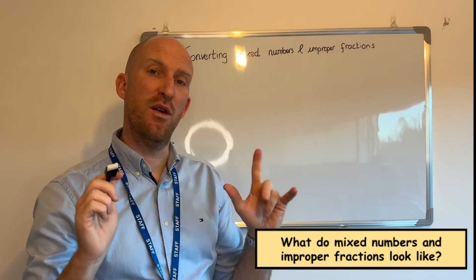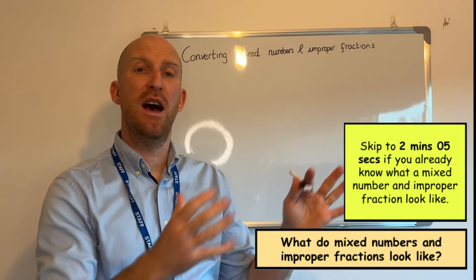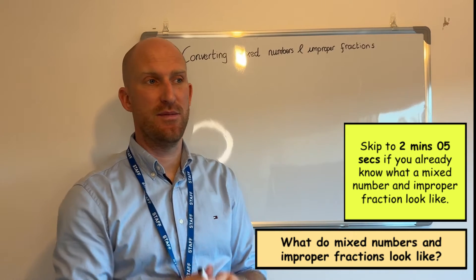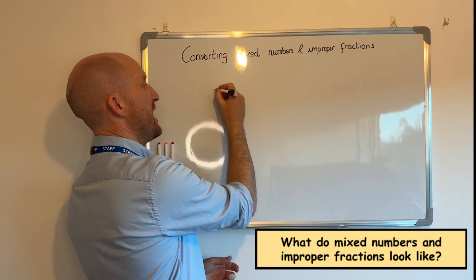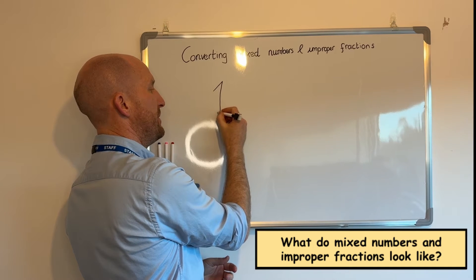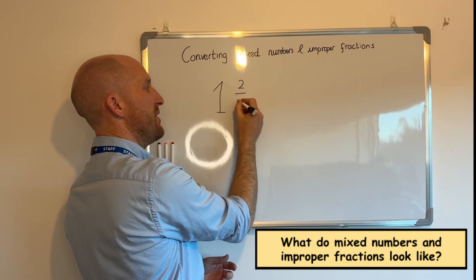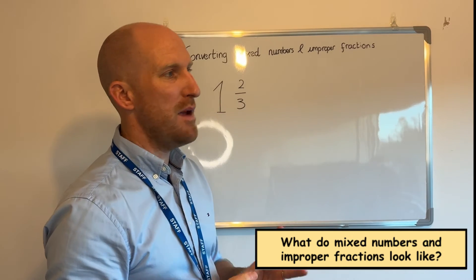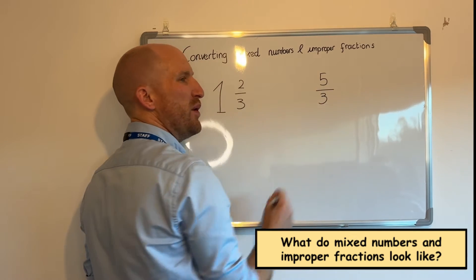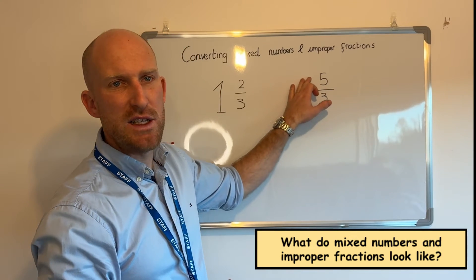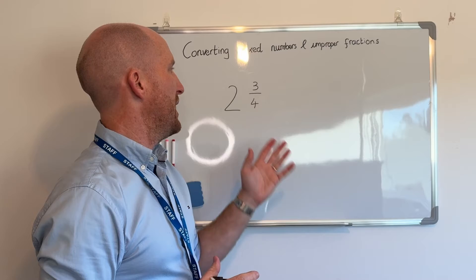Now the first thing that we need to understand is what does a mixed number look like and what does an improper fraction look like. A mixed number always has a large number with a regular looking fraction at the side of it, whereas an improper fraction looks like a regular fraction but the numerator is always larger than the denominator.